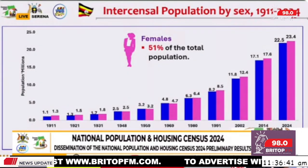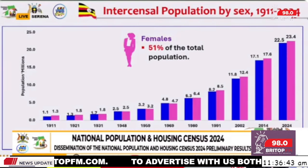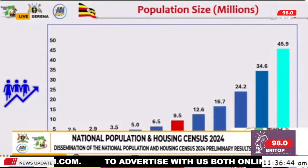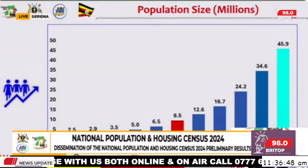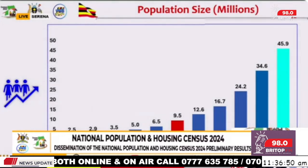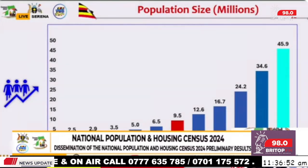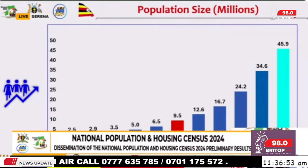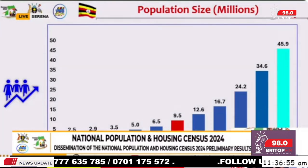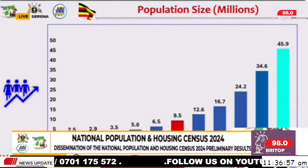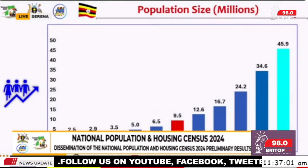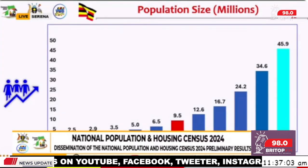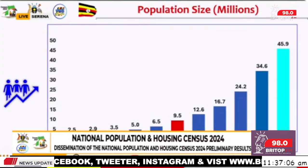This slide shows us the trend from 1911 all the way through 2014 and 2024. It is apparent that every year we add 1.13 million people.